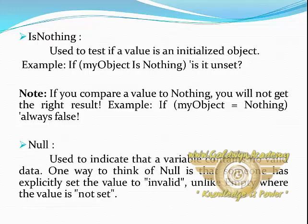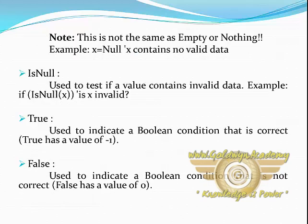Null. It is used to indicate that a variable contains no valid data. One way to think of null is that someone has explicitly set the value to uninitialized, unlike empty where the value is not set. Note: this is not the same as empty or nothing. Example: x = null — x contains no valid data.